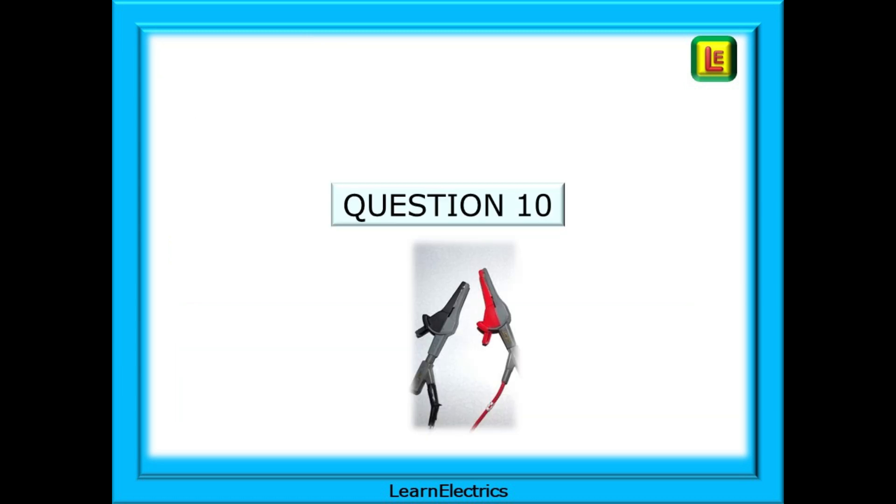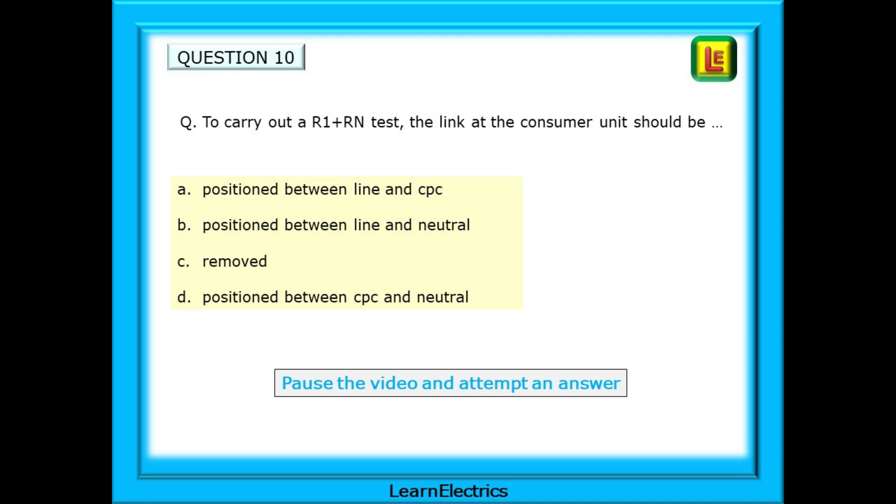And finally, question 10. As we said, don't expect this many questions on one scenario in an exam. This is just practice to make you more proficient. Expect four, perhaps five questions. We are asked, in order to carry out an R1 plus Rn test, the link at the consumer unit should be something. And then the usual four choices of answer. Pause the video and then find the answer on the next slide.